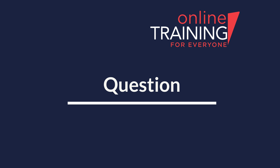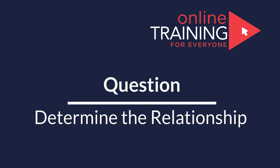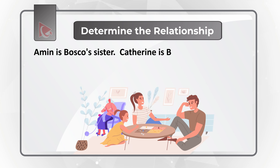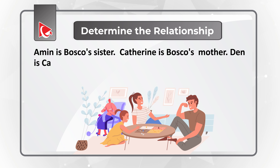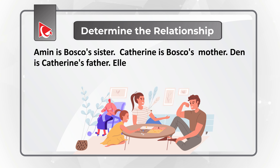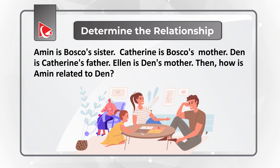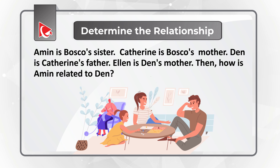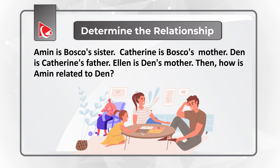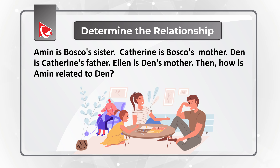Here's an interesting challenge where you need to determine the relationship between family members. Amin is Baska's sister. Catherine is Baska's mother. Dan is Catherine's father. And Alan is Dan's mother. You need to determine how Amin is related to Dan.